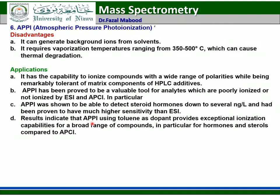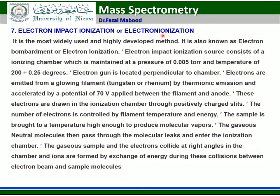Electron impact ionization (EI), also known as electron bombardment or electron ionization, is the most widely used and highly developed method. The EI ionization source consists of an ionization chamber maintained at a pressure of 0.005 torr and a temperature of 200 degrees Celsius. An electron gun is located perpendicular to the chamber; electrons are emitted by thermionic emission and accelerated by a potential of 70 volts applied between the filament and the anode. These electrons are drawn into the ionization chamber through a positively charged slit. The number of electrons is controlled by filament temperature and energy. The sample is brought to a temperature high enough to produce molecular vapors, which then pass through molecular leaks and enter the ionization chamber where gaseous sample molecules and electrons collide at right angles, forming ions by energy exchange.